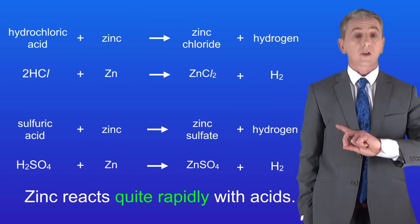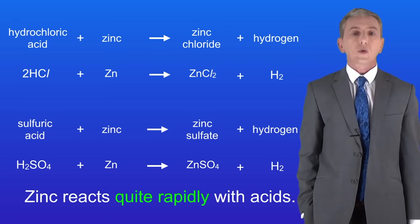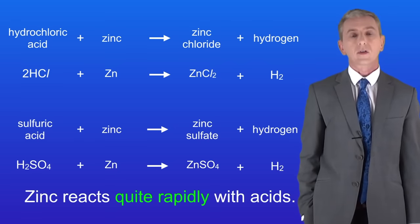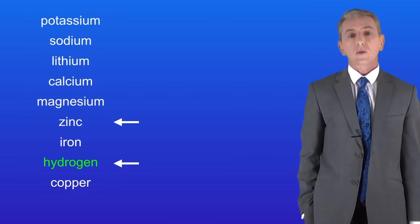Here's zinc reacting with hydrochloric acid and sulfuric acid. This is quite a rapid reaction and again we can see why by looking at the reactivity series. Zinc is more reactive than hydrogen so it can quite easily displace hydrogen from acids.